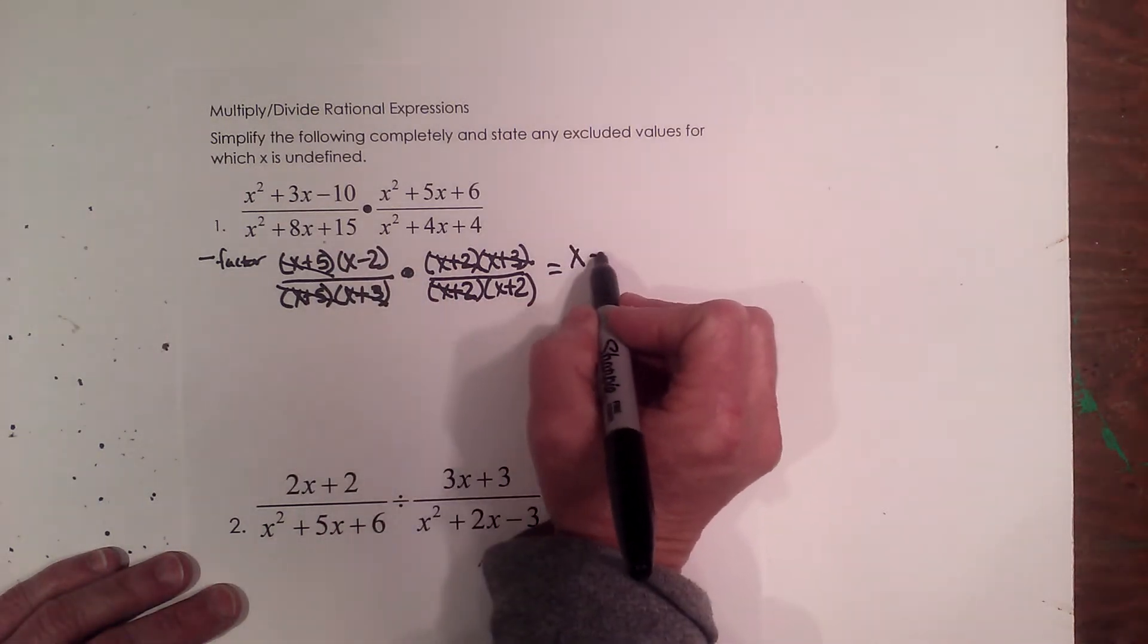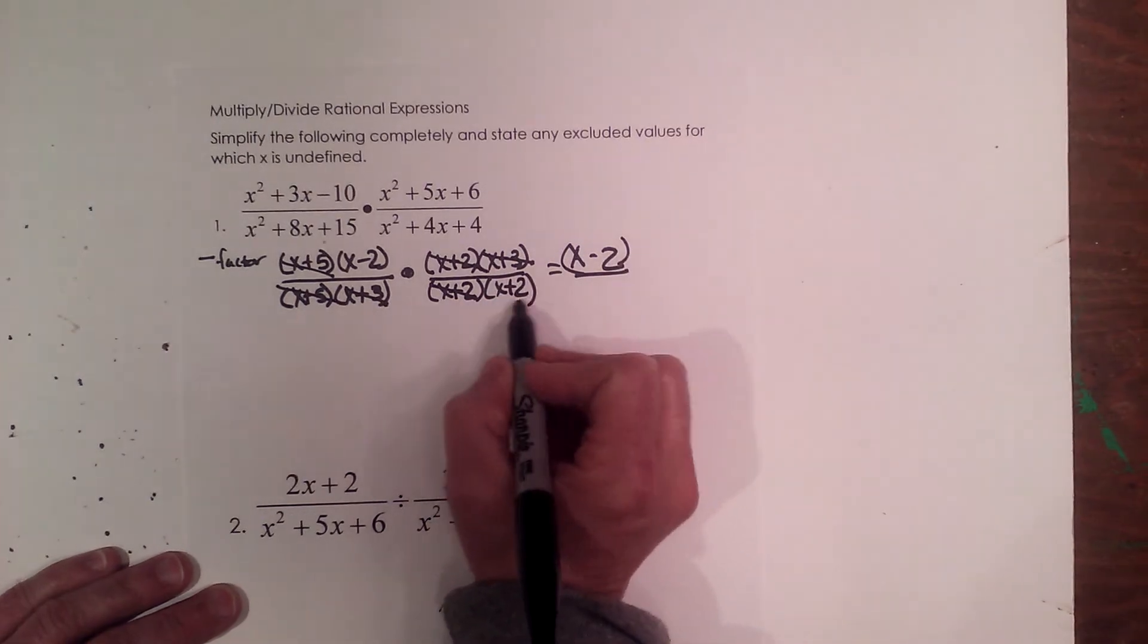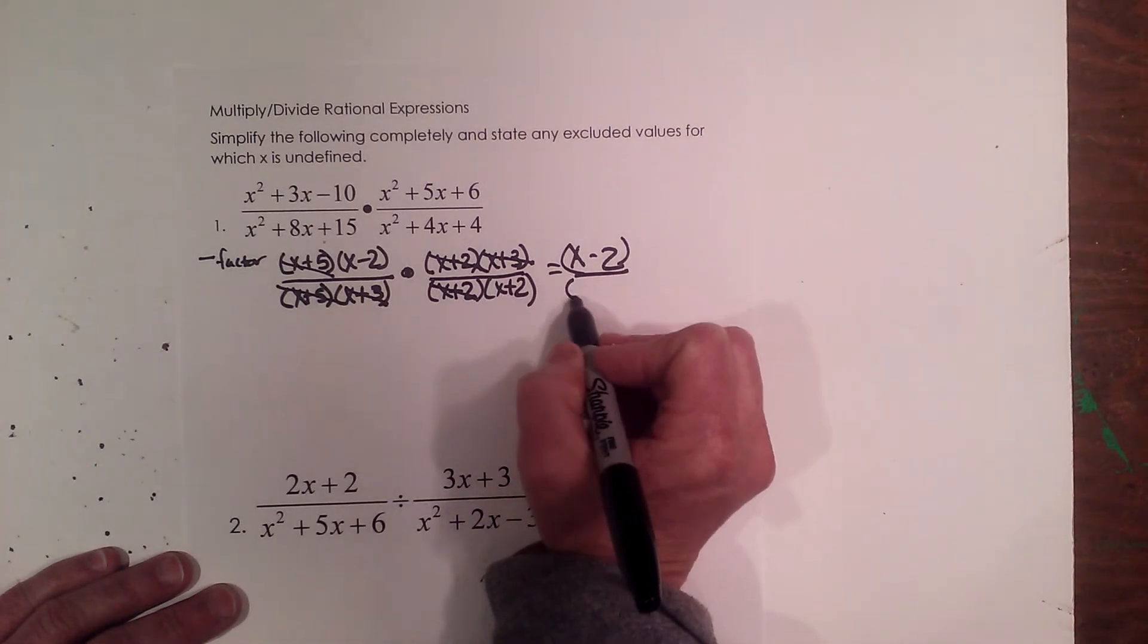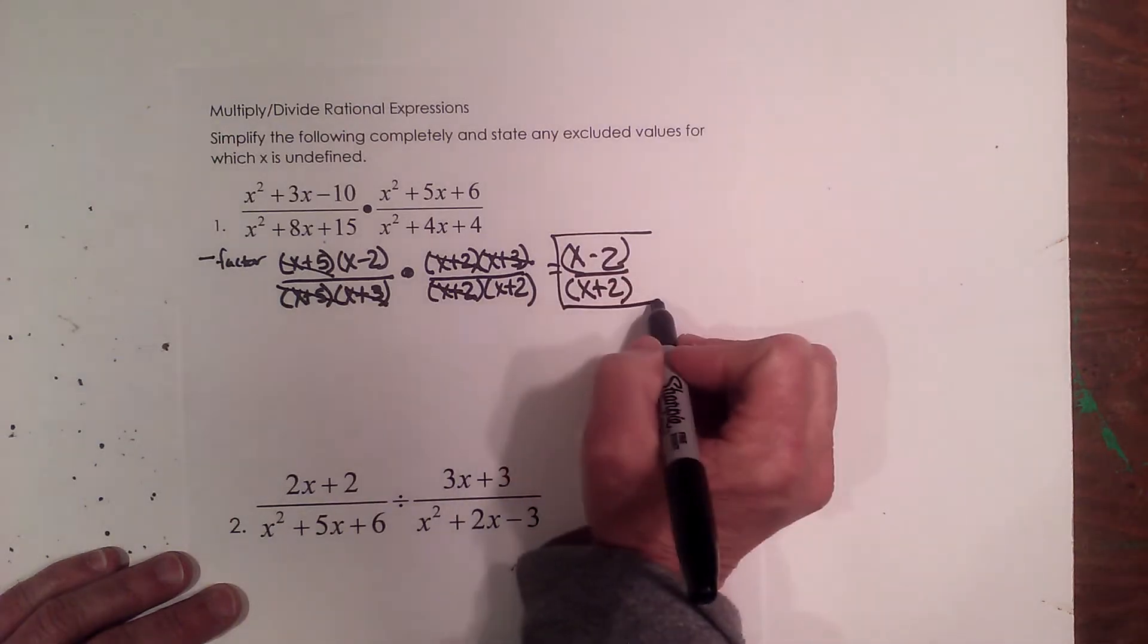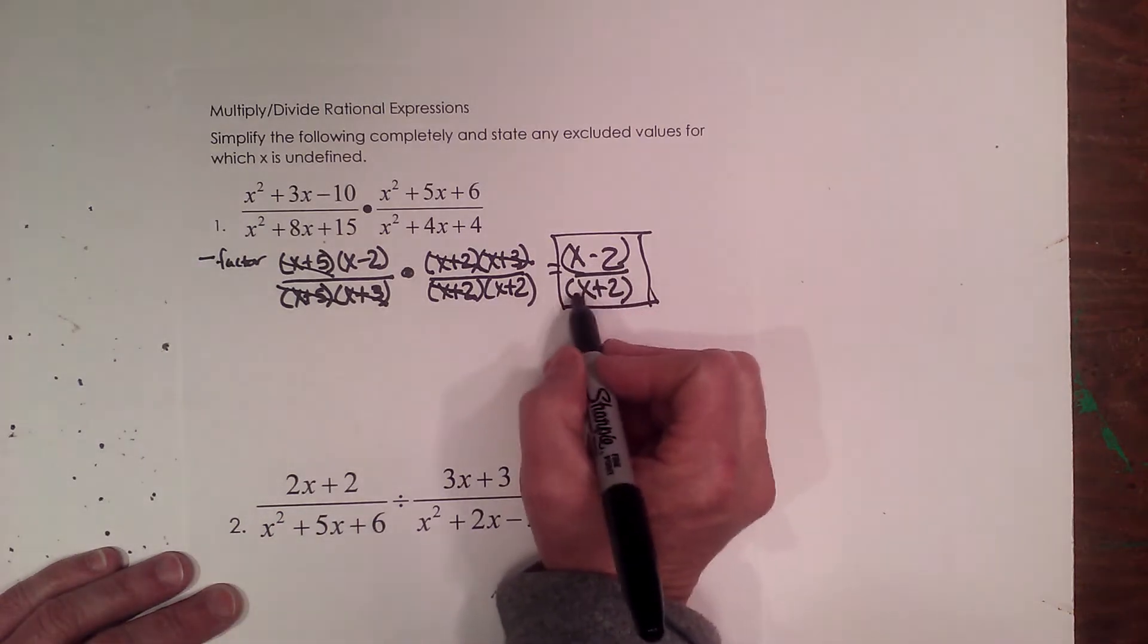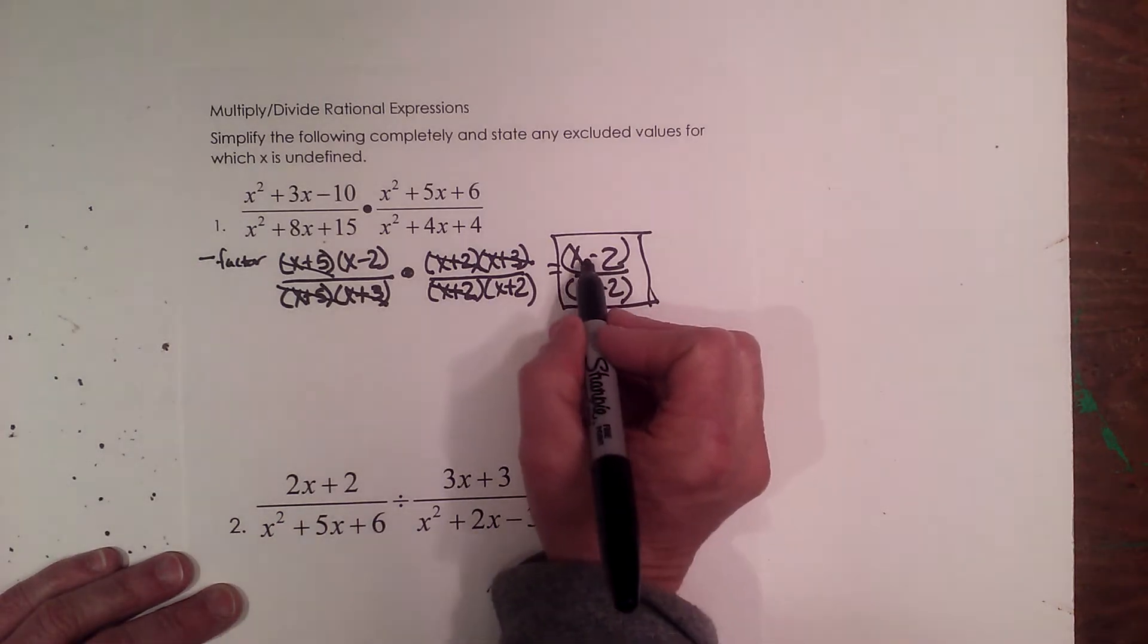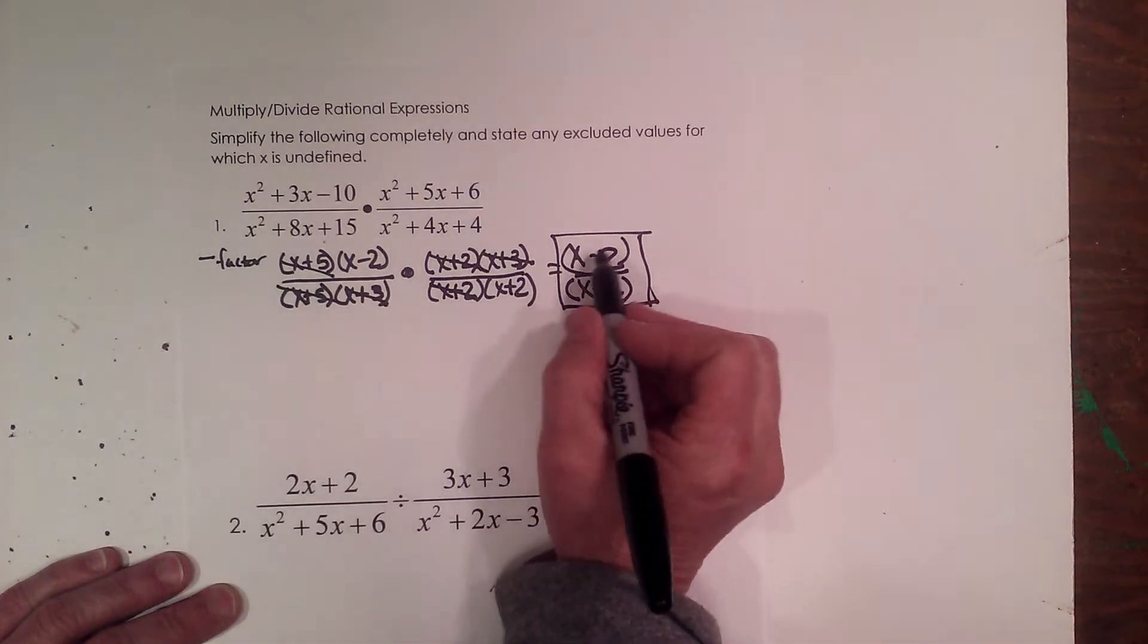So what's left? Well, I have an x minus 2 in the numerator, and that's one binomial, and I can have left in the denominator x plus 2. So there's my final answer. Now, these don't cancel out because a binomial can only cancel out with an identical binomial. This one's x minus 2, and this one's x plus 2, and those values are different.